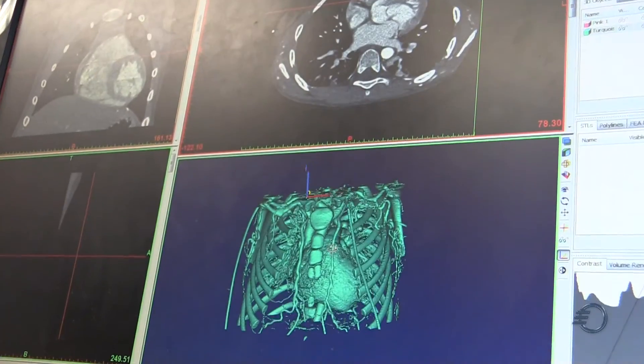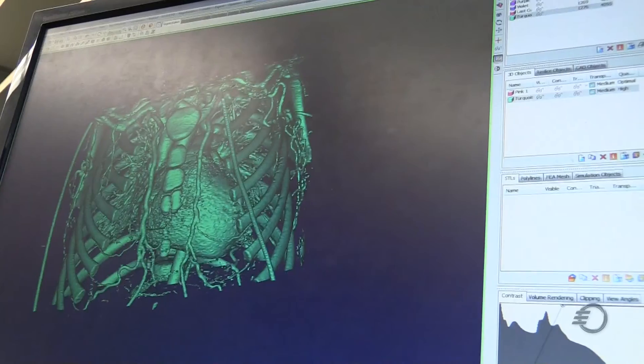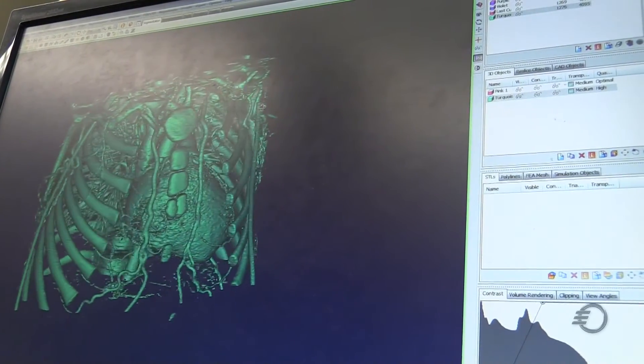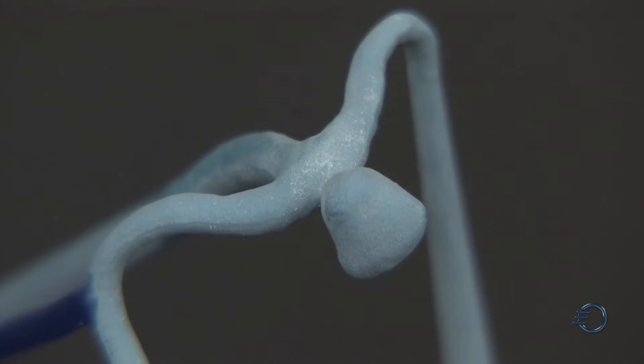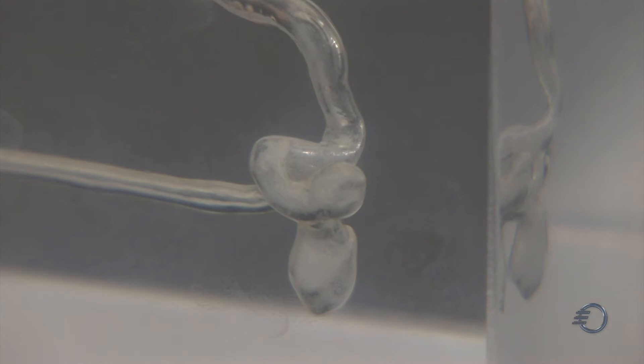Right now we are in an emergent environment. There's a patient that has some type of malformation in their anatomy, some type of disease of a structure. We can visualize that based off CT images, reconstruct it on the computer, and then 3D print it so a doctor can actually hold a patient's anatomy in their hand before he or she ever operates on a patient.